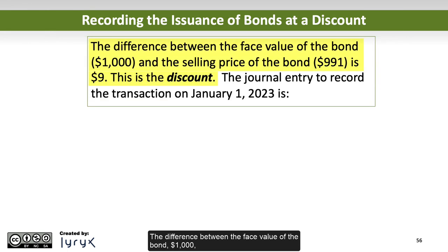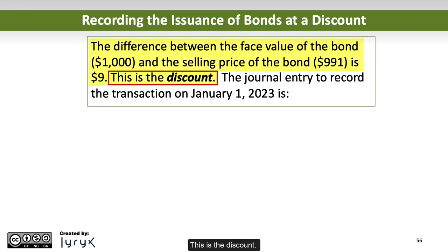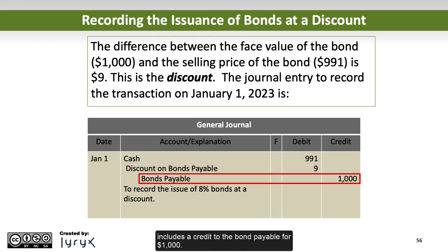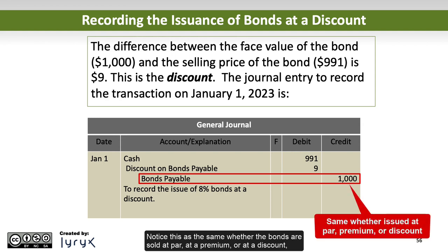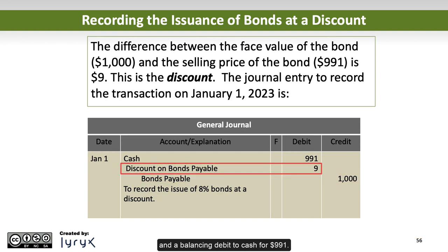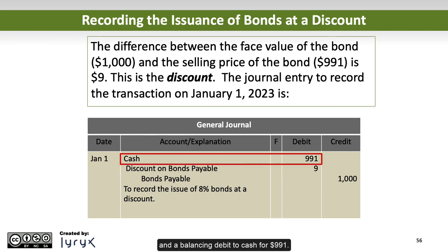We will round $990.83 to $991 to simplify the demonstration. The difference between the face value of the bond, $1,000, and the selling price, $991, is $9 — this is the discount. The journal entry to record the transaction on January 1, 2023 includes a credit to bonds payable for $1,000. Notice this is the same whether bonds are sold at par, at a premium, or at a discount. Then we have a debit to discount on bonds payable of $9, and a balancing debit to cash for $991.